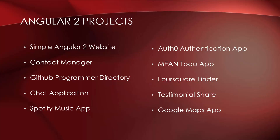Next, we'll dive into the MEAN stack and we'll build an advanced to-do app. We'll build a directory application using the Foursquare API. We'll build an application for sharing testimonials and also implement Firebase. And finally, we'll implement Google Maps with Angular 2 in an Ionic mobile application.